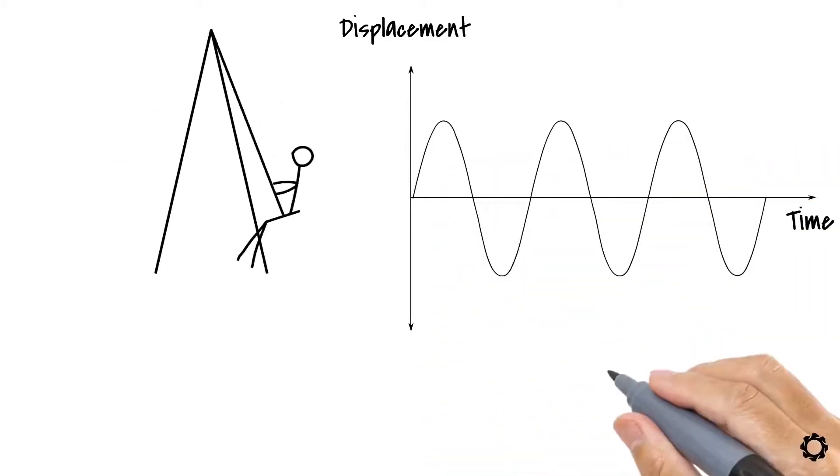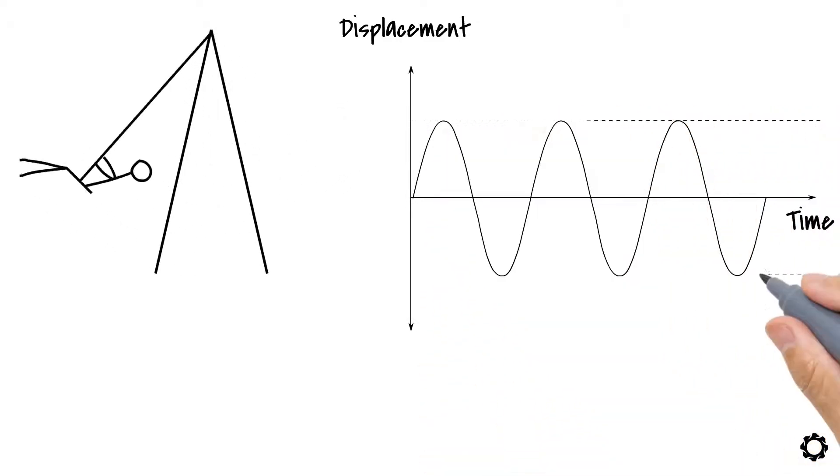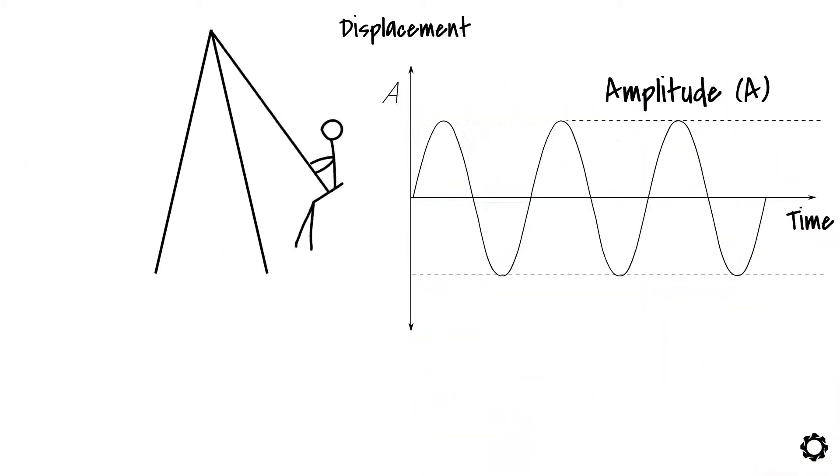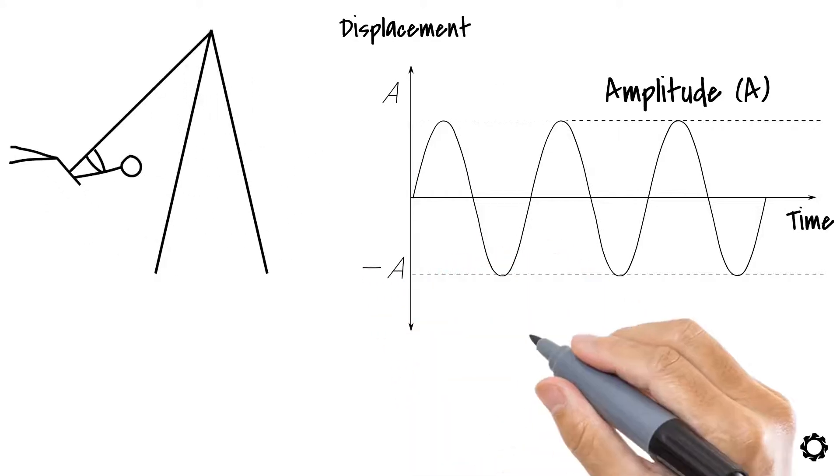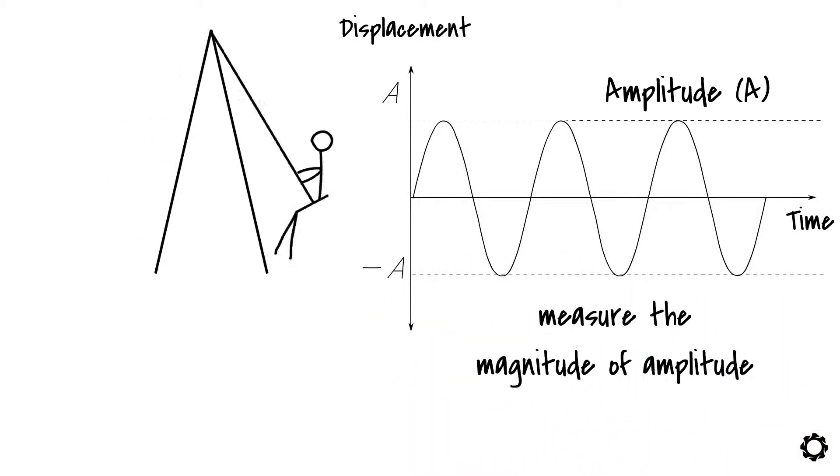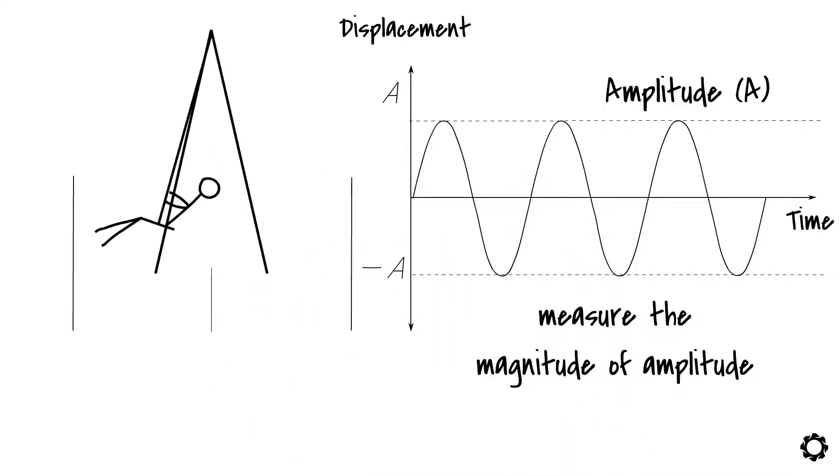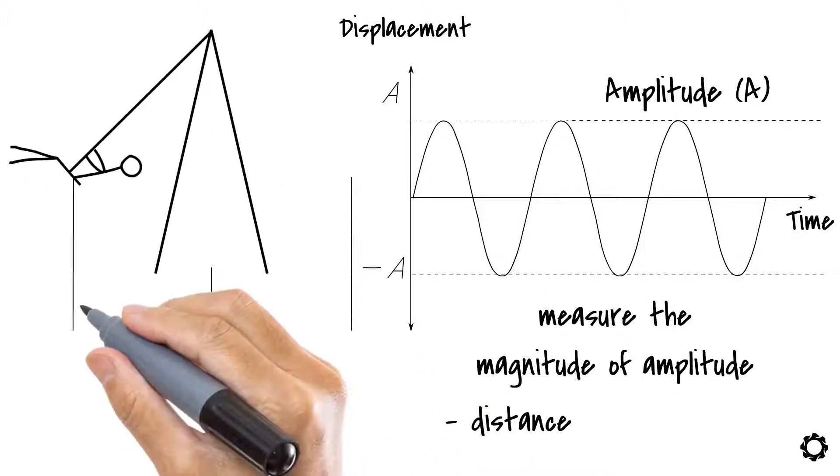But what you may not know is that the highest point which the swing can reach is called the amplitude for which we usually use the abbreviation A. We can measure the magnitude of this amplitude by using a suitable quantity and proper unit, which in this case is the distance between the swing's equilibrium position and the furthest position.